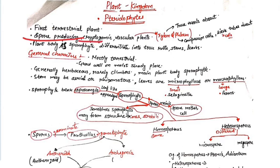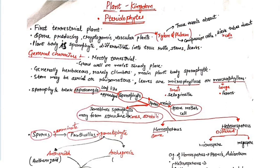Pteridophytes are cryptogams. Cryptogams and phanerogams differ in that pteridophytes have no seeds — they are seedless vascular plants. Xylem and phloem are present, making them vascular plants.